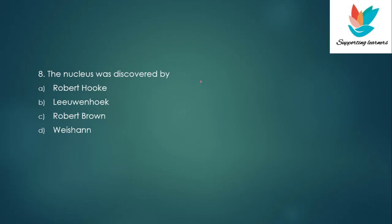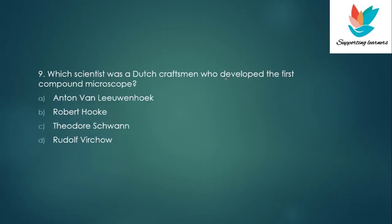Question 8: Nucleus was discovered by? The answer is Robert Brown — Robert Brown discovered the nucleus. Question 9: Which scientist was a Dutch craftsman who developed the first compound microscope? The answer is Anton van Leeuwenhoek.